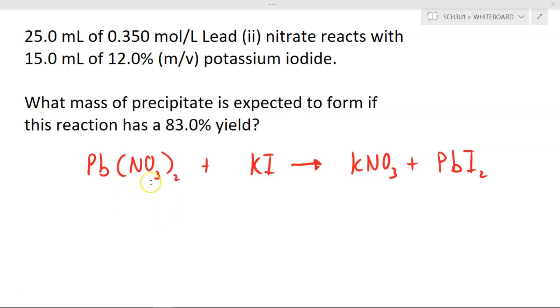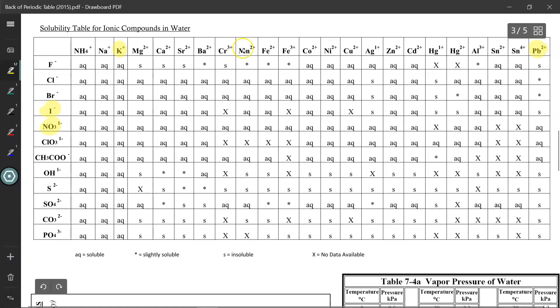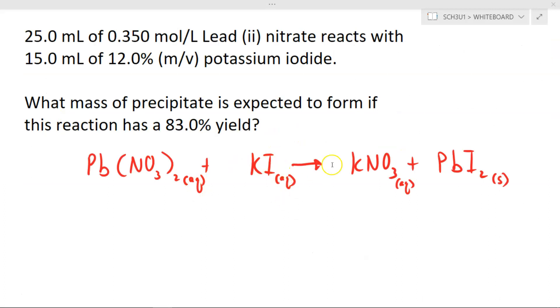So the first step is to write out the chemical equation, so I can use my solubility chart to determine the state of matter for each of these chemical compounds. Aqueous, aqueous, aqueous solid, and now I know who my precipitate is. Don't forget to balance the equation.